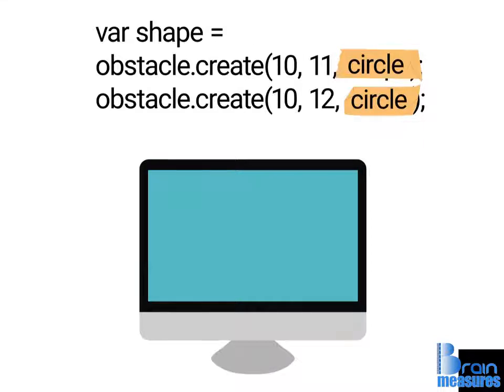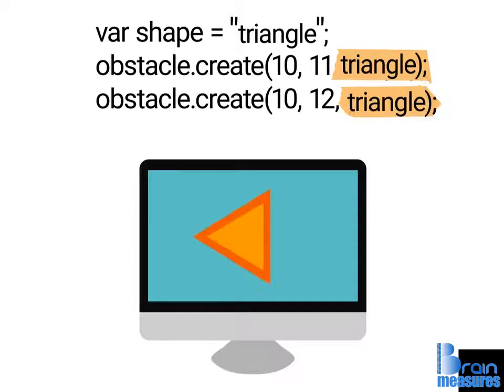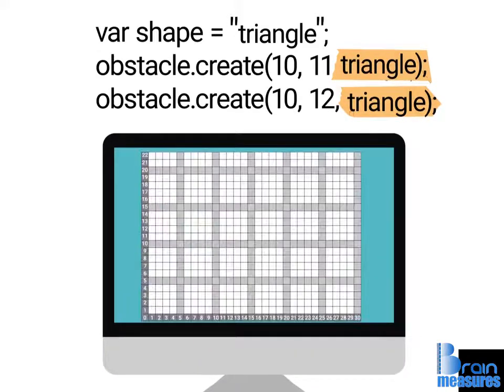What if we change our mind and want triangles instead of circles? All we need to do is switch out the word circle for triangle. The next time we execute our code, all the obstacles will be triangles. This makes it so much easier to change the shape of multiple obstacles all at once.